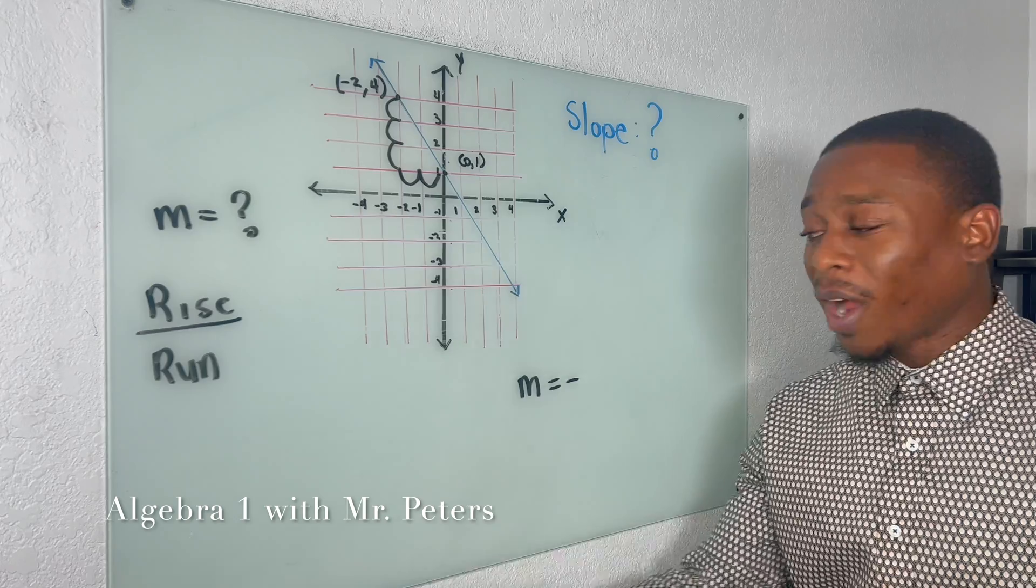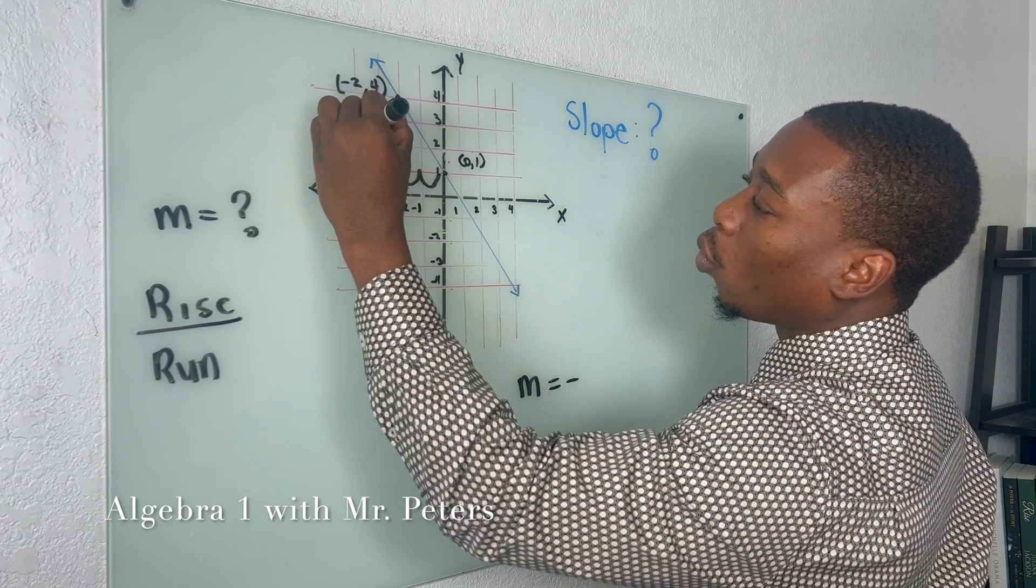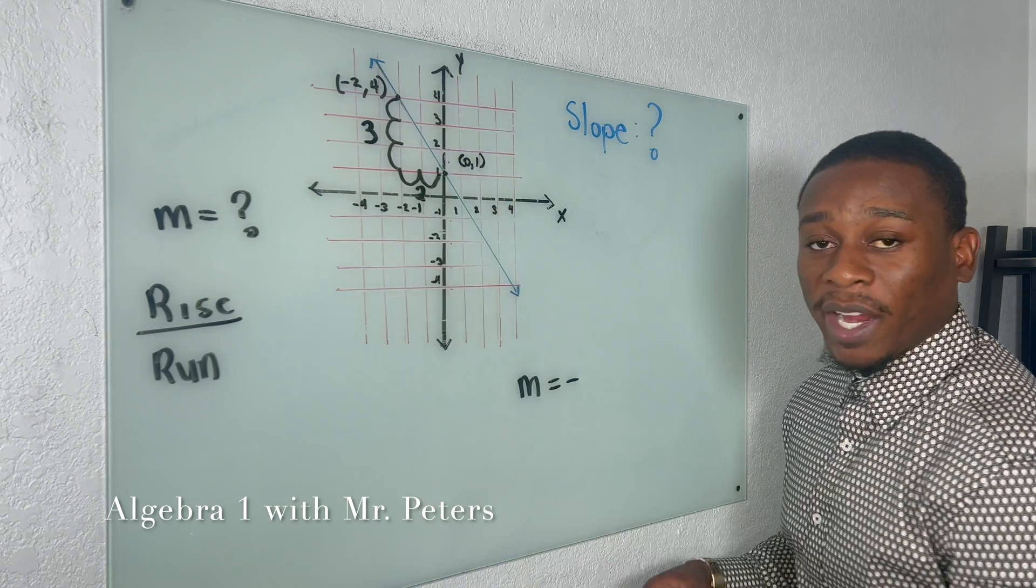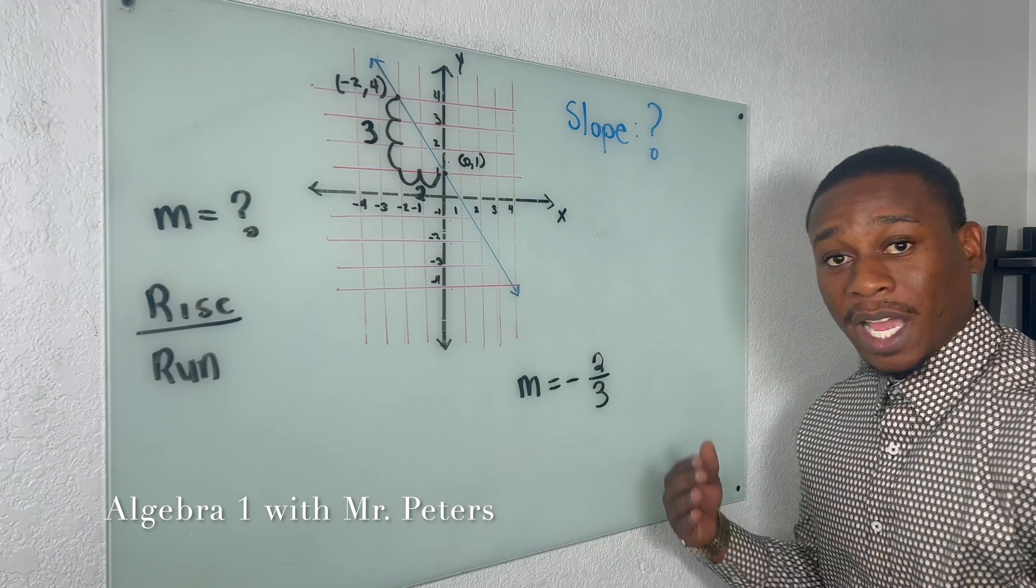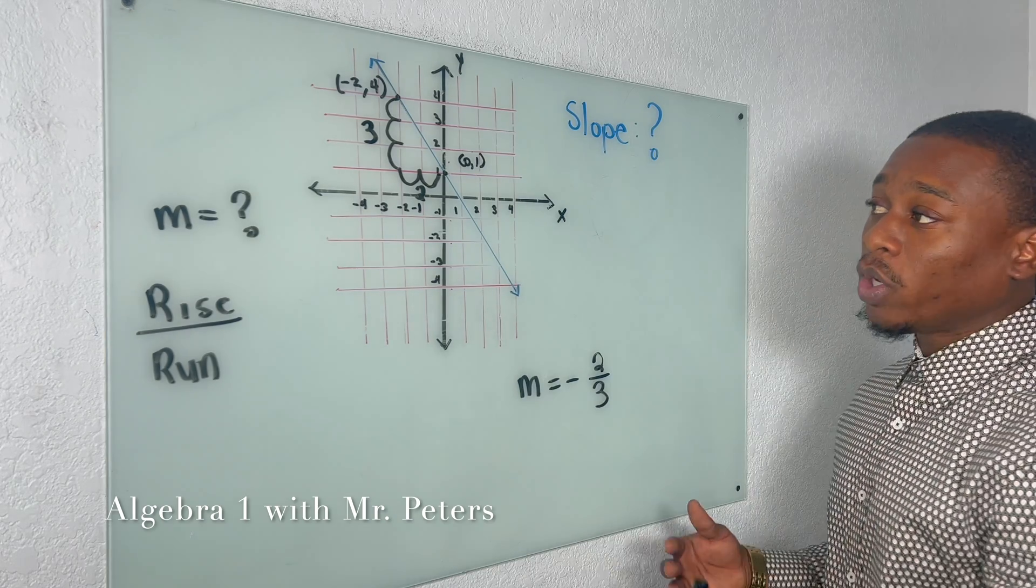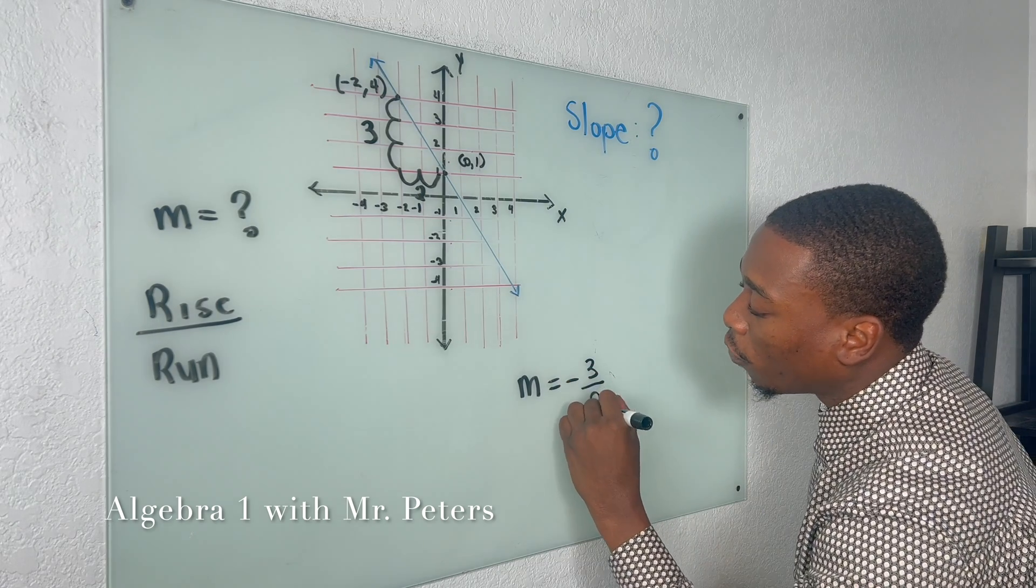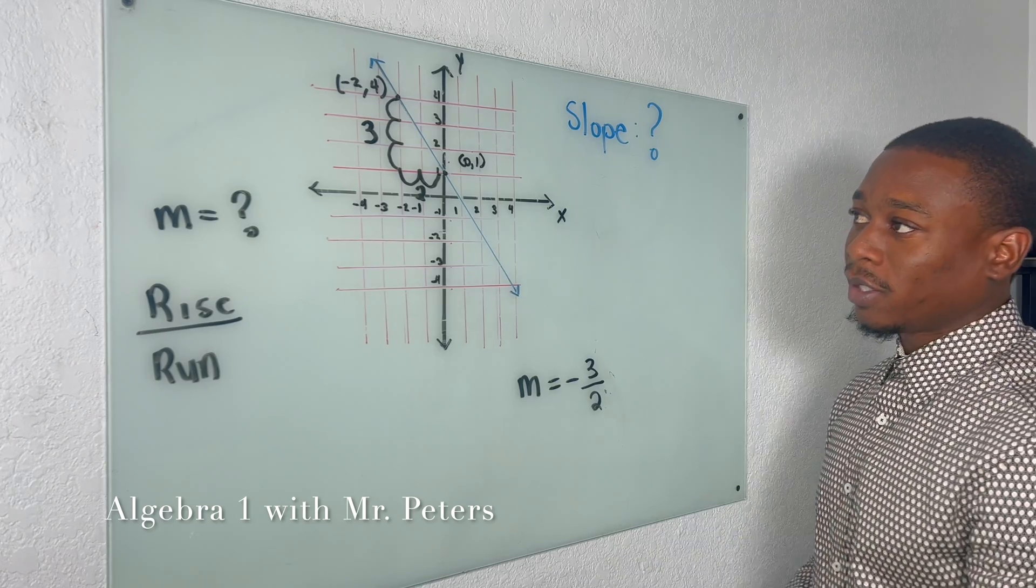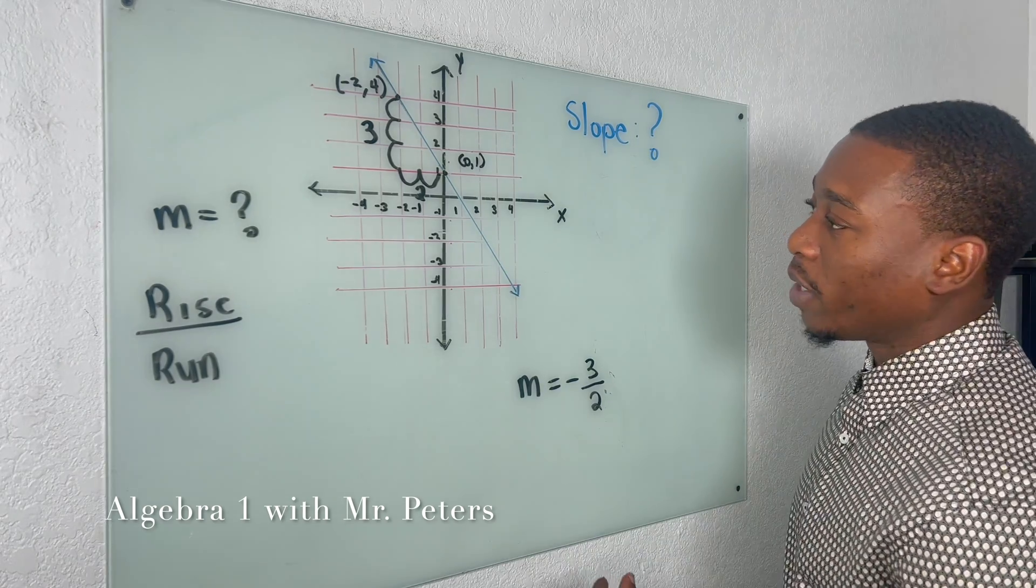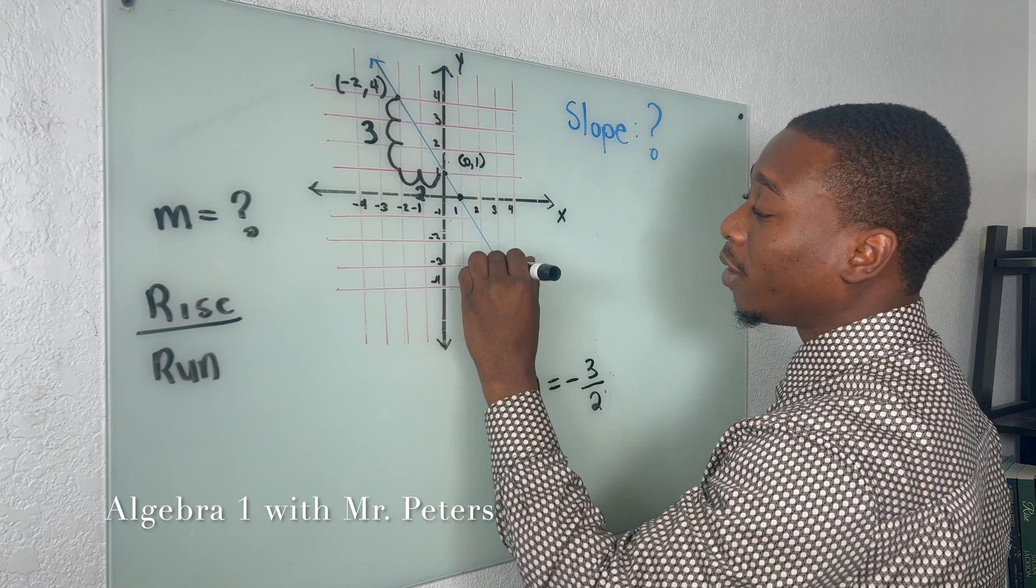So we have exact points, we count the rise over run, just make sure that we put it in the right order, meaning we don't put two over three because that would be wrong, right? We didn't go up two over three, we went up three over two or down three over two, it's gonna be the same thing guys. So please make sure you guys remember that.